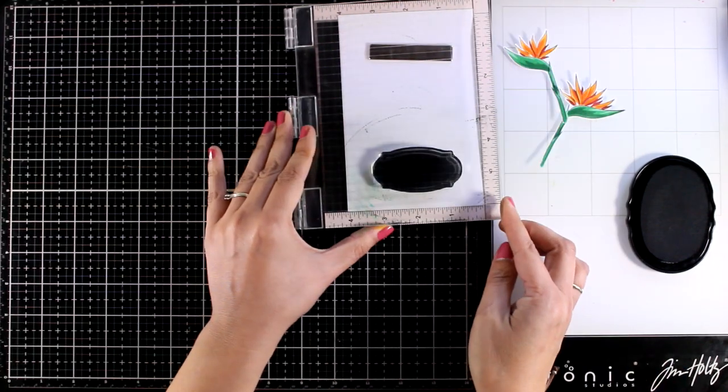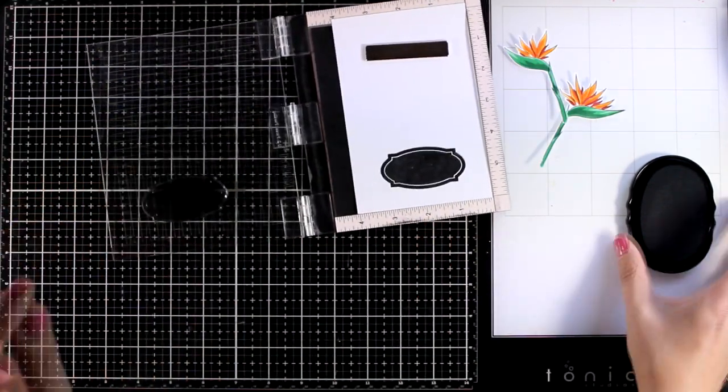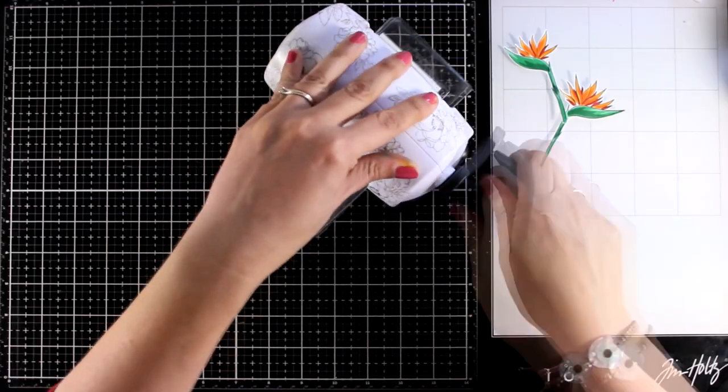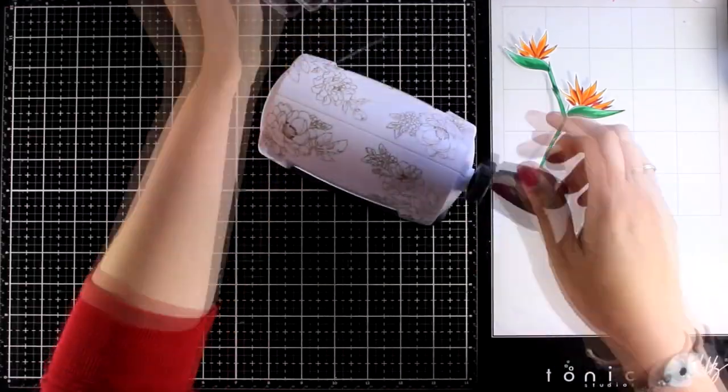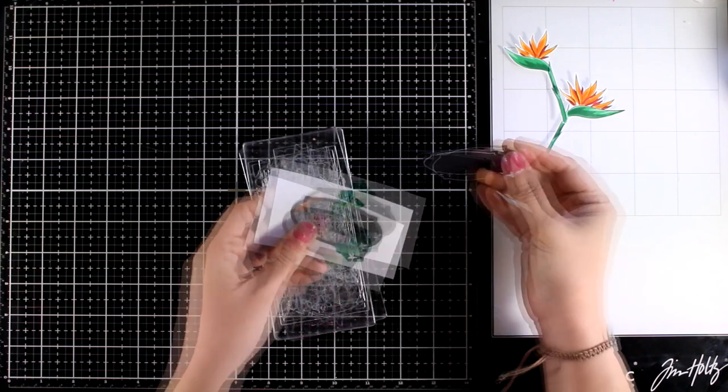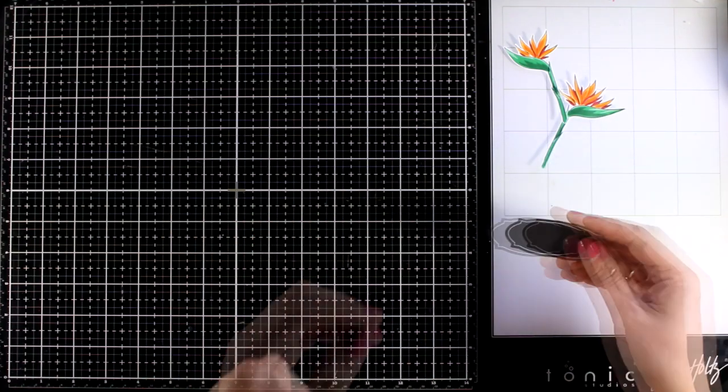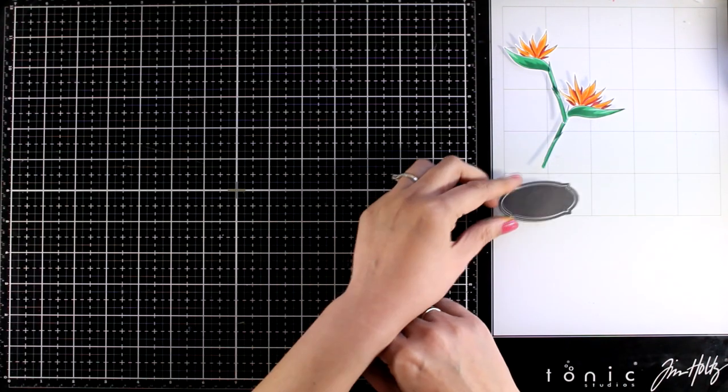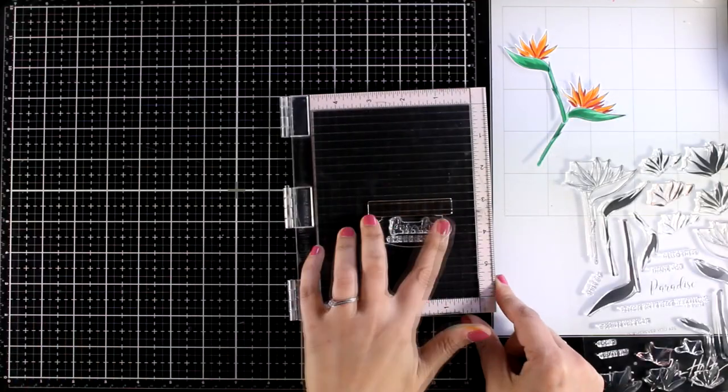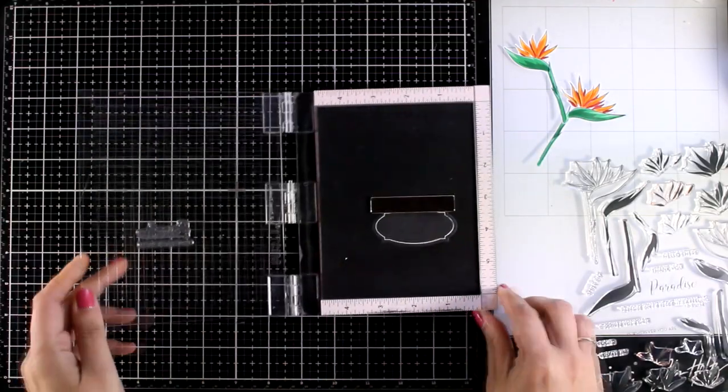And I think that three times did the trick. So now I'm going to use the matching die and cut out my label. You can emboss your sentiment on top of this label. Just remember to make sure that the black ink is completely dry otherwise your embossing powder is going to stick all over the place.